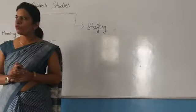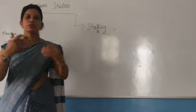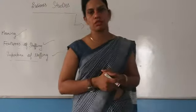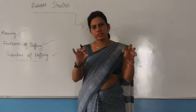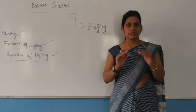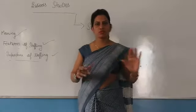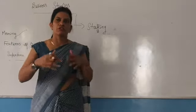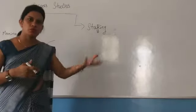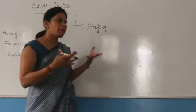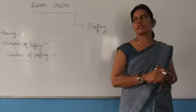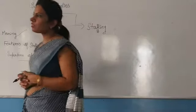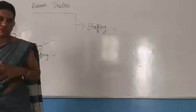First of all, we will have to do the plans — what is to be done in the future and how it is to be done. All the activities related to the future are planned. That is the first function of management. In the second function, we organize the resources and create an organization structure — how many employees will be there, how many managers at the first level, how many at the second level. That was decided and done in the second function of management, which is organizing.